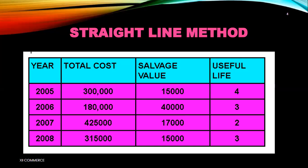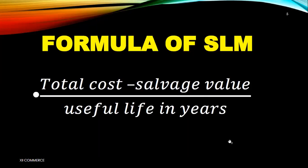Please share your answers. For 2006, total cost is 180,000, salvage value is 40,000, and useful life is three years. For 2007, total cost is 425,000, salvage value is 17,000, and useful life is two years. The formula to apply is: total cost minus salvage value divided by useful life in years.